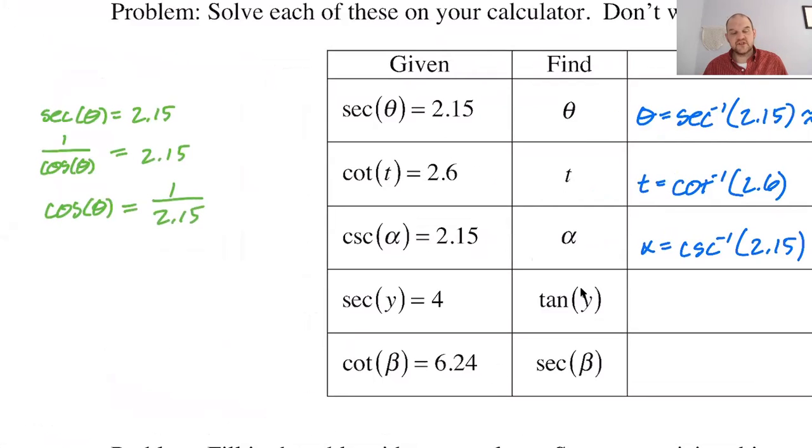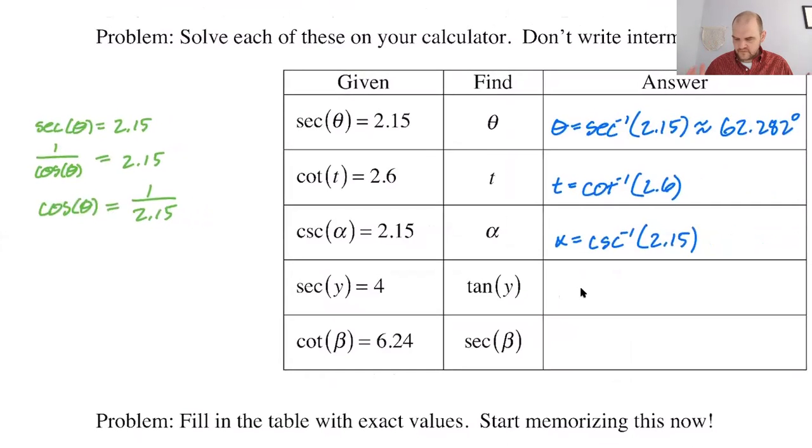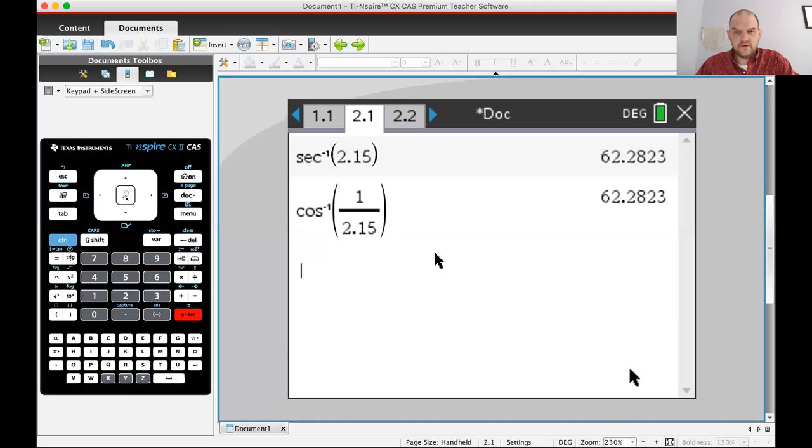Now, I've done these types of problems just a million times, so I see secant of theta equals 2.15. I kind of immediately think, well, I could just work with cosine and say cosine is 1 over 2.15. I don't have to simplify 1 over 2.15, but it's easier to think about in terms of cosine. So sometimes you'll find yourself kind of doing that. Either way, you're going to get 62.282 degrees. So let's go back to the calculator and do the others and see what we get.